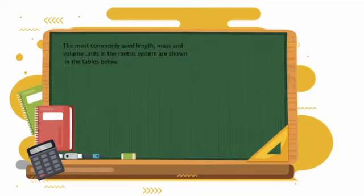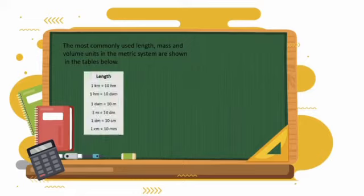The most commonly used length, mass, and volume units in the metric system are shown in the table below. For length: 1 kilometer equals 10 hectometers, 1 hectometer equals 10 decameters, 1 decameter equals 10 meters, 1 meter equals 10 decimeters, 1 decimeter equals 10 centimeters, 1 centimeter equals 10 millimeters.